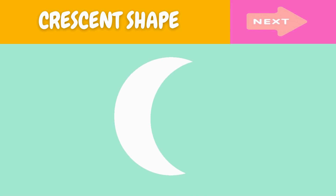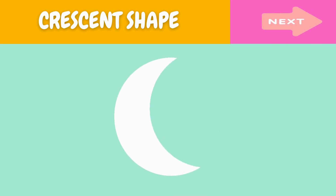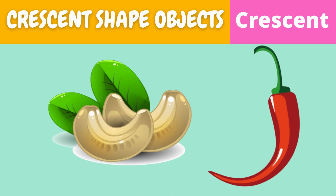This is a cross shape. What is this? This is a cross shape. Here are some examples of cross-shaped objects.